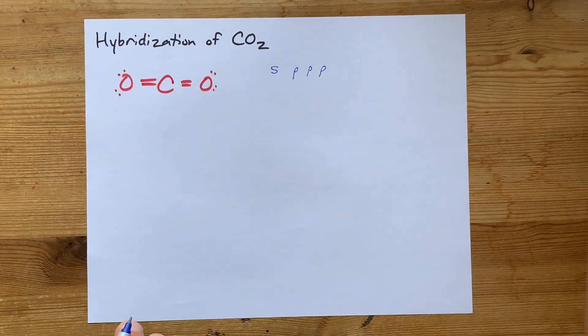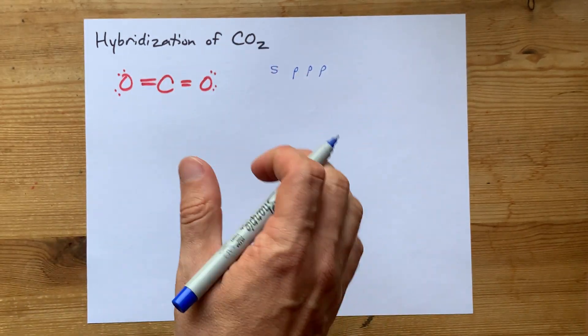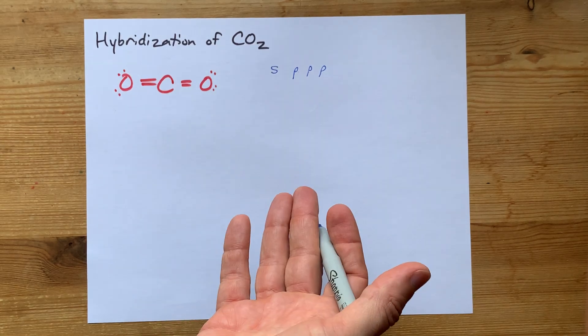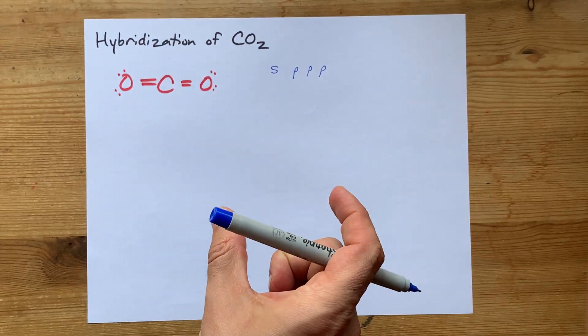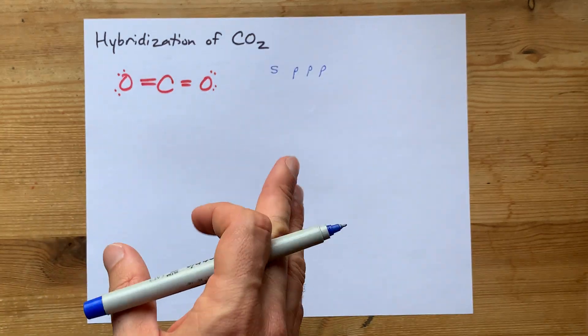Now, the way that I figure out hybridization is to set aside P orbitals every time I need a pi bond. A pi bond is the second or third bond between any two atoms.